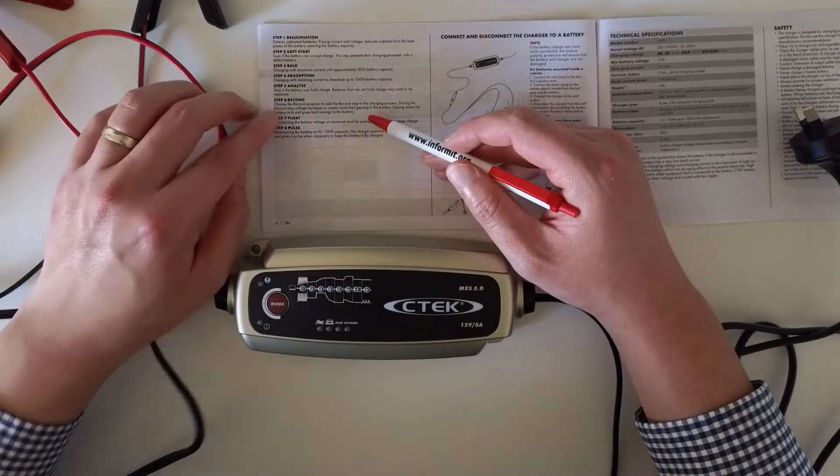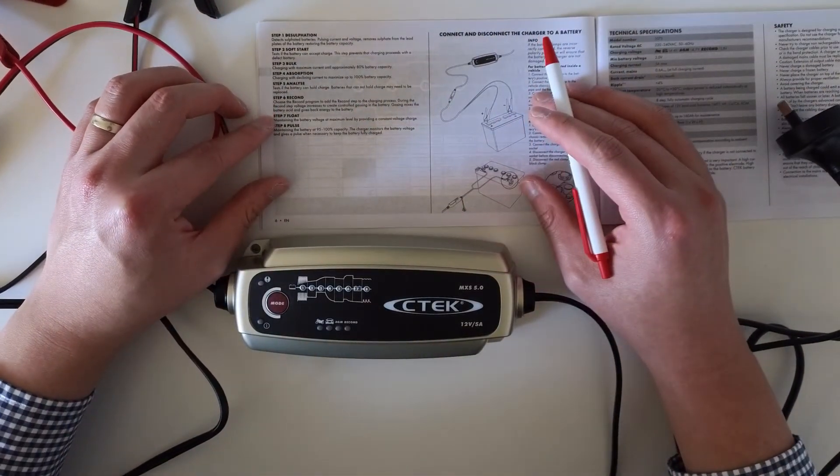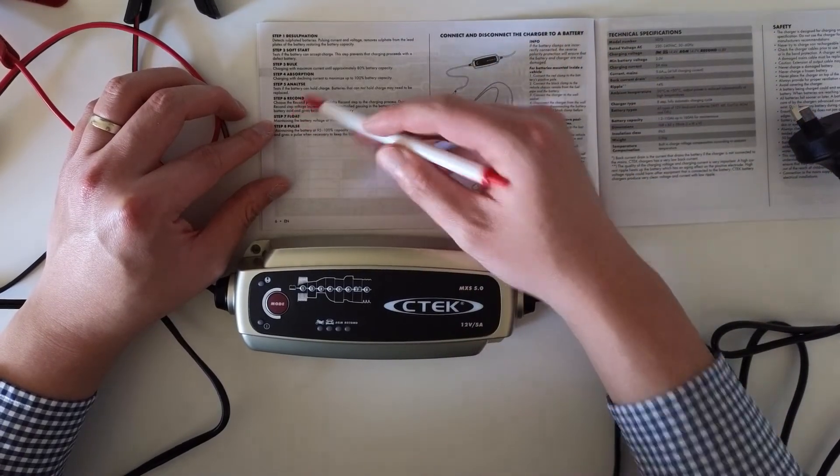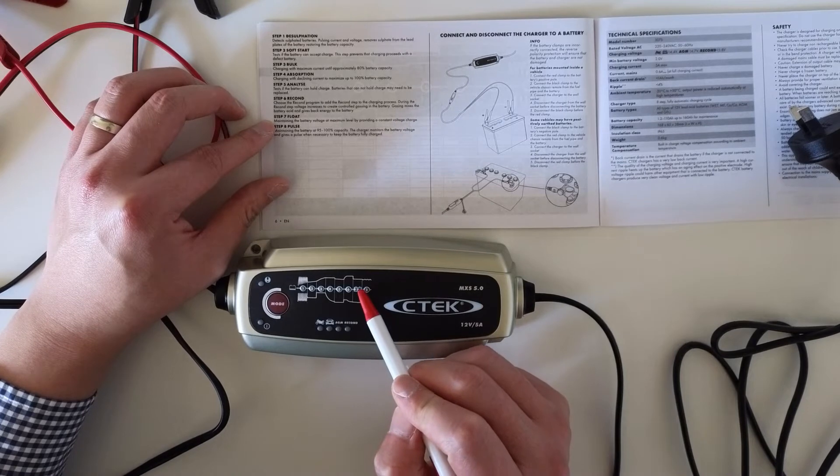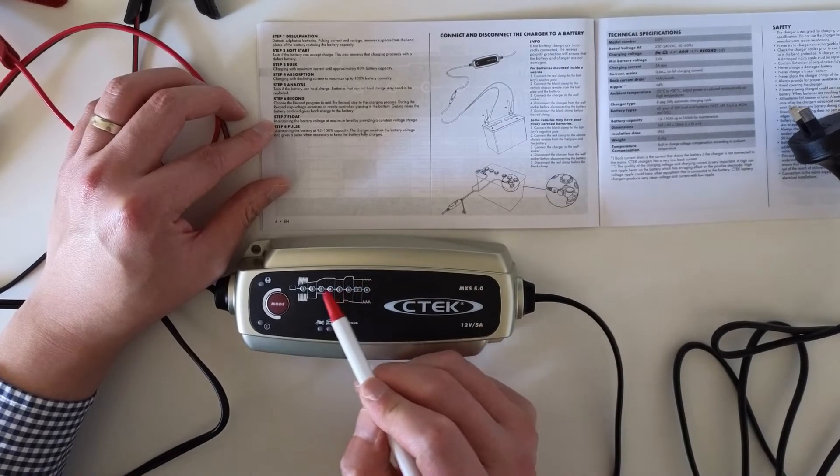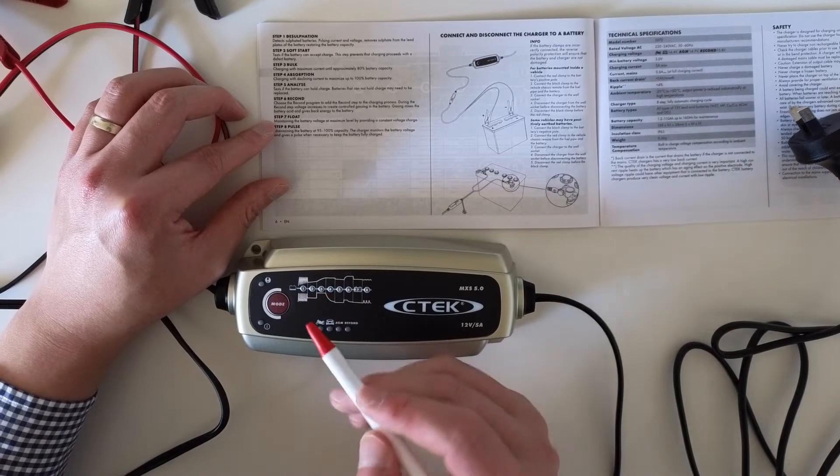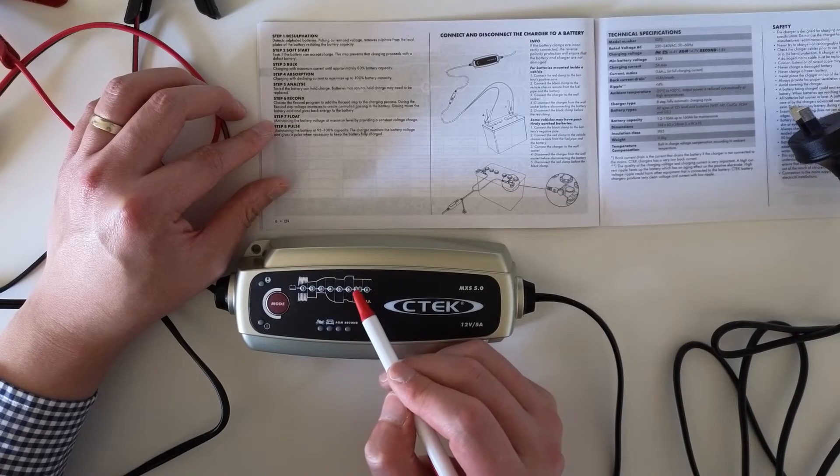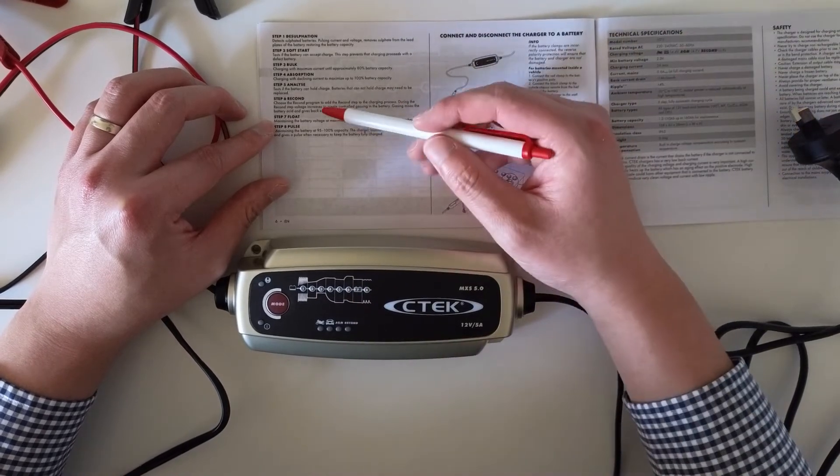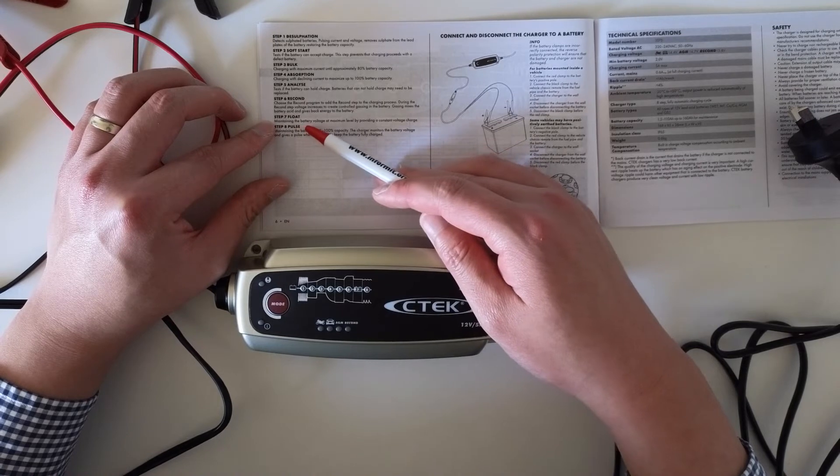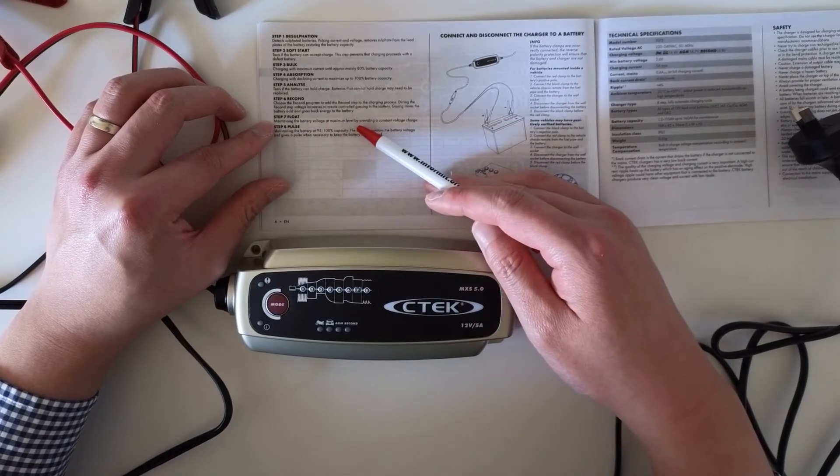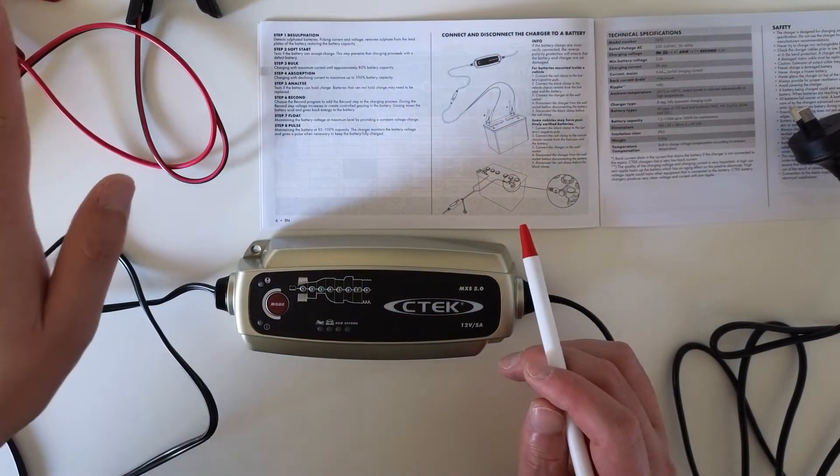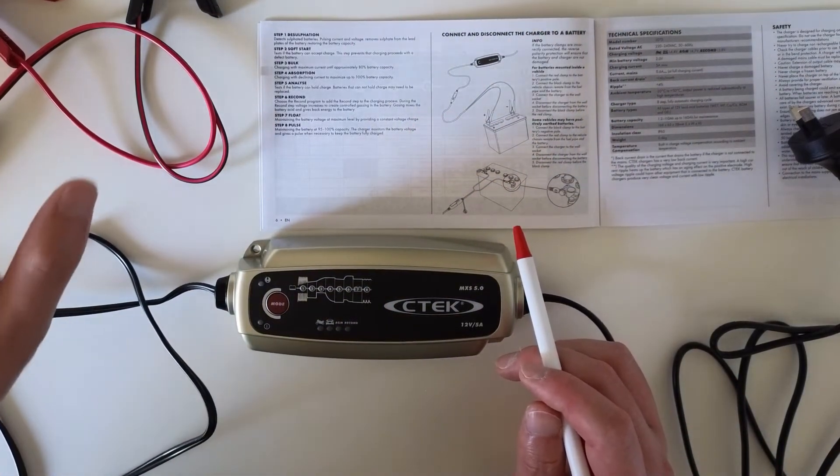Step seven is basically once you reach step seven, this one will be green. All other LEDs are kind of like orange, so that means the battery should be able to use. Step seven tries to maintain the battery voltage at maximum level by providing a constant voltage charge. You will still try to charge the battery by maintaining the battery at maximum voltage level.